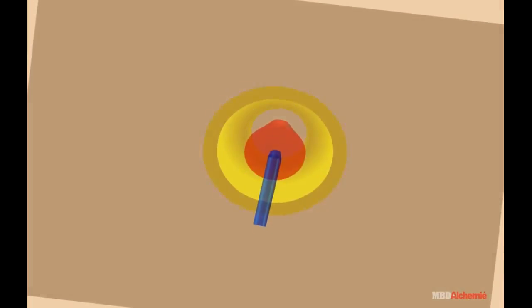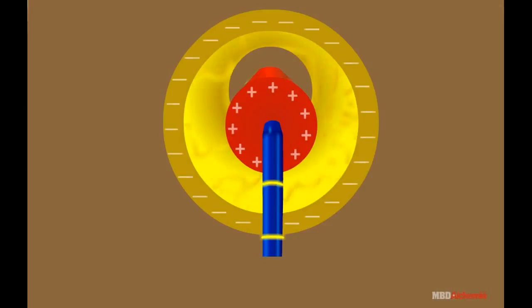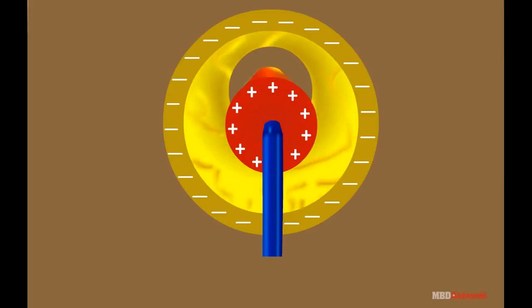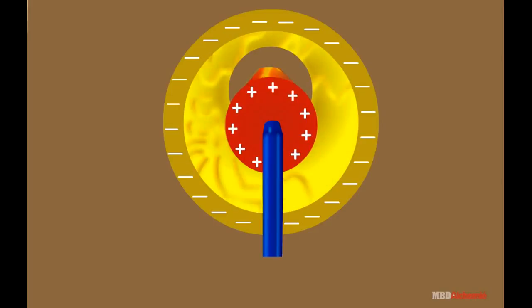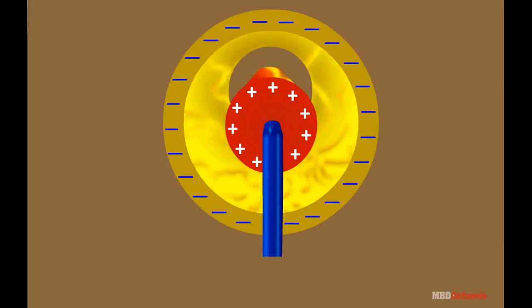Energy is stored in the capacitor in the form of charge. The inner cylinder carries a positive charge and the outer cylinder carries a negative charge.